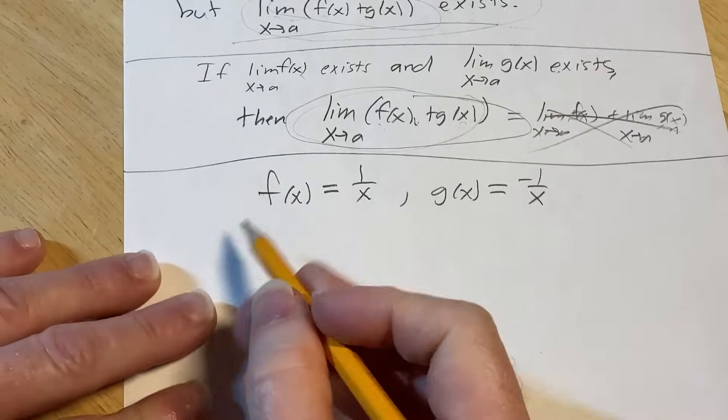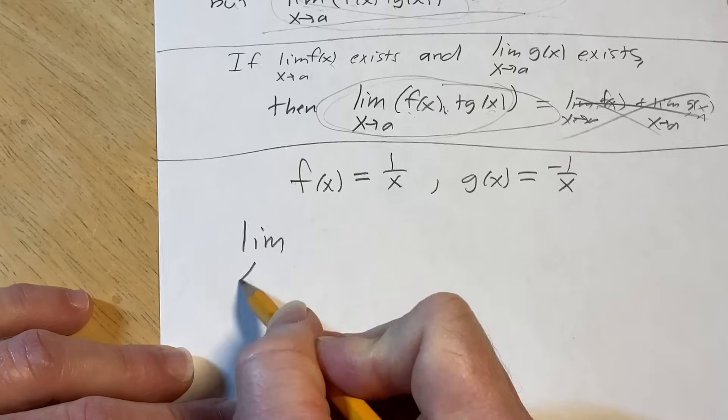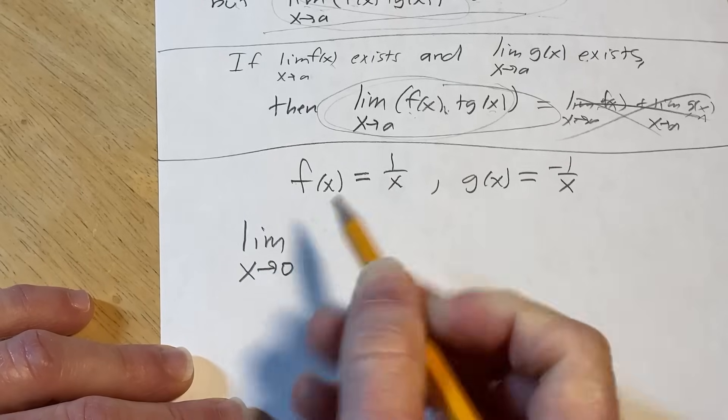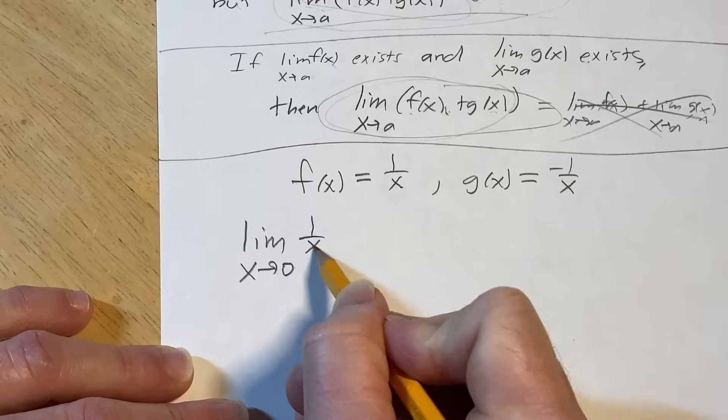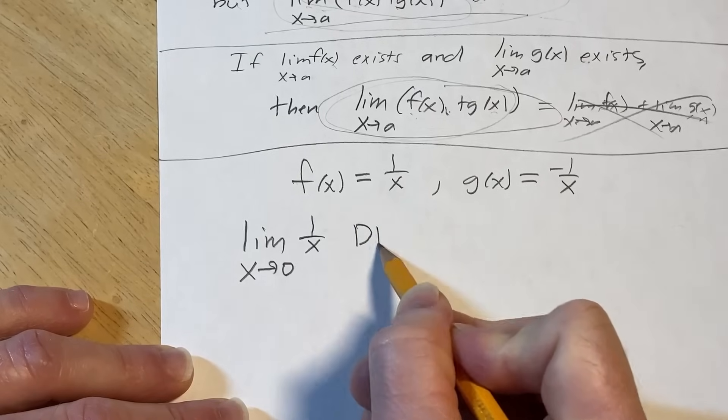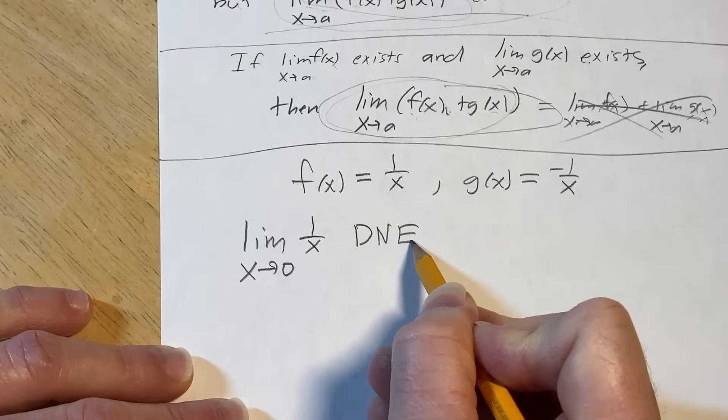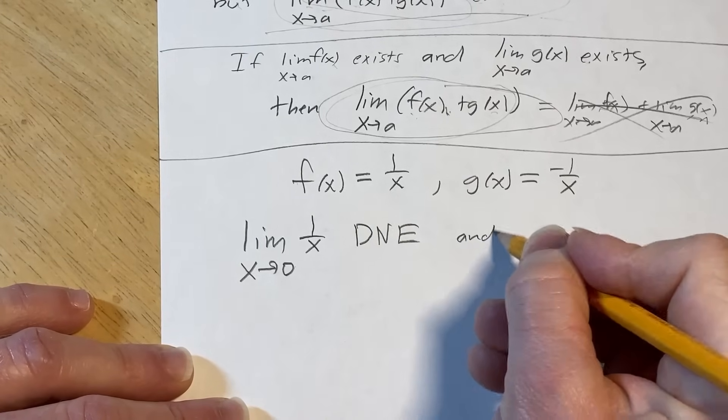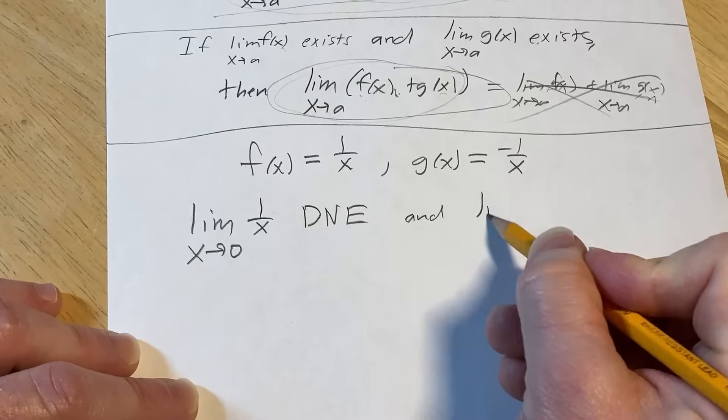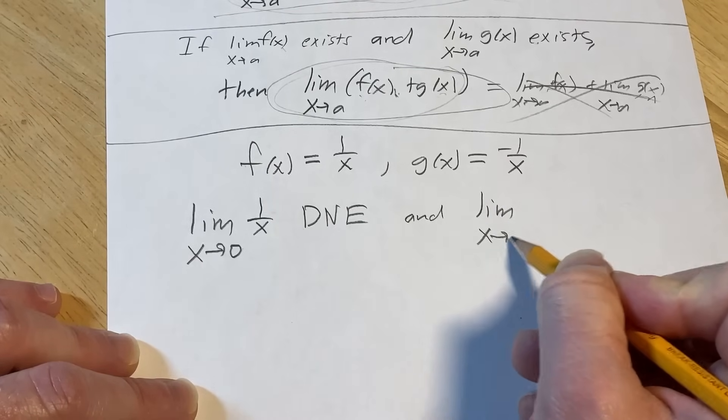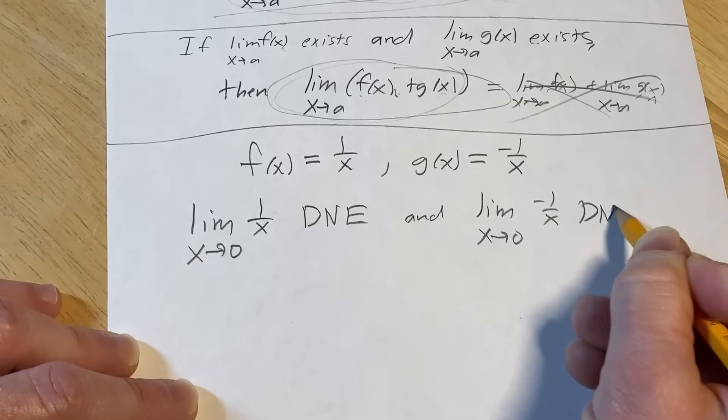And so now note that if we look at the limit as x approaches 0 of 1 over x, this does not exist. And if you look at the limit as x approaches 0 of negative 1 over x, it also does not exist.